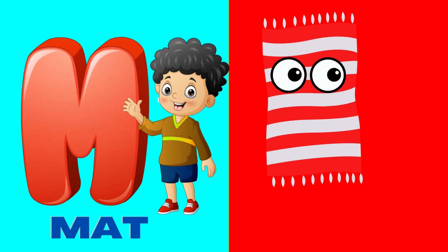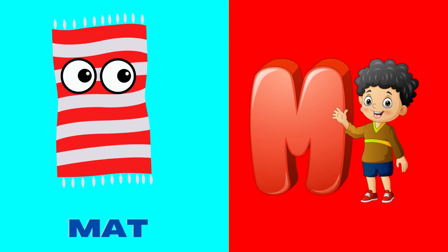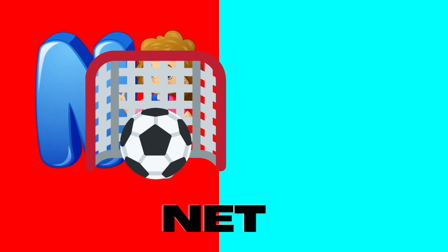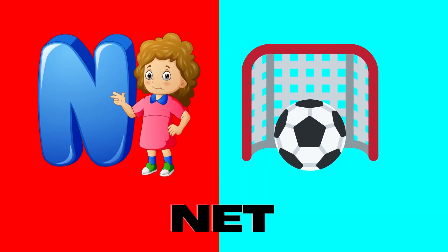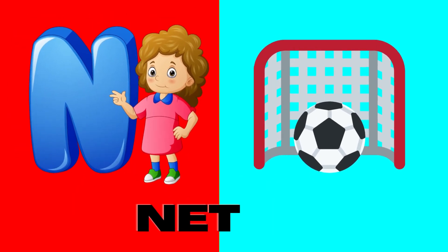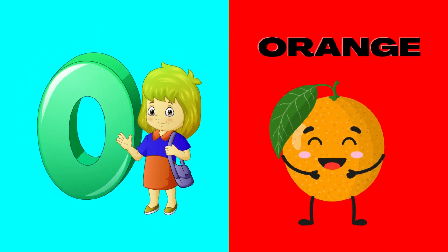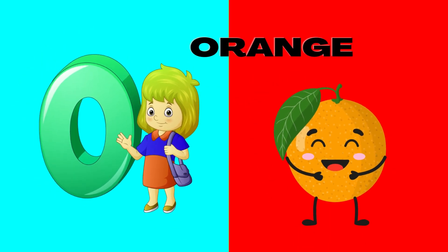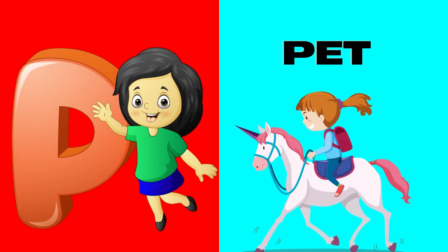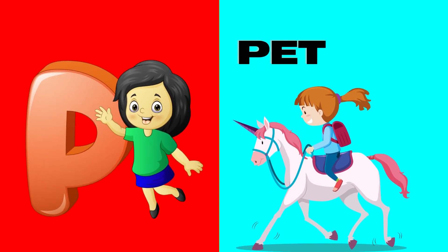M is for mat, m-m-mat. N is for net, n-n-net. O is for orange, o-o-orange. P is for pet, p-p-pet.